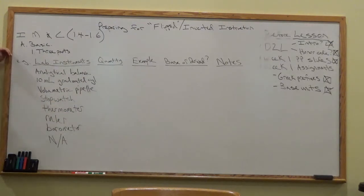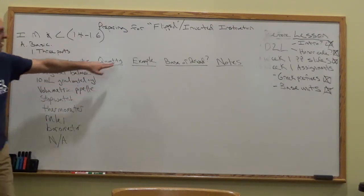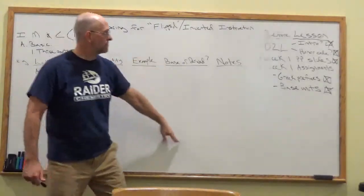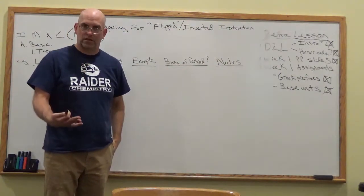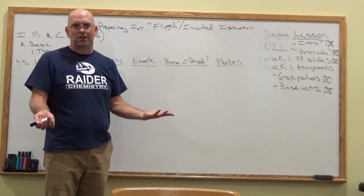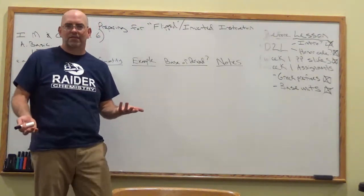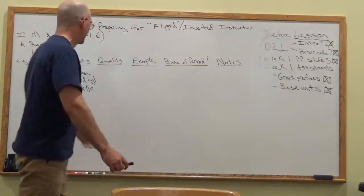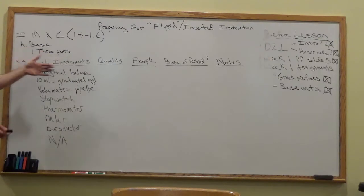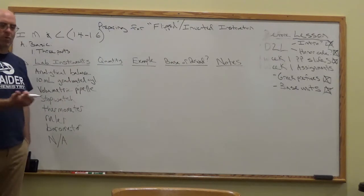So in your notes — this is what I normally would be writing on the board — there's a table on the PowerPoint slides of different kinds of lab instruments that you'll use. The columns cover: the instrument itself, what it's measuring, an example measurement, whether it's a base unit or a derived unit — meaning that you do something to that unit — and any additional notes. This gives us a chance to also work on some abbreviations.